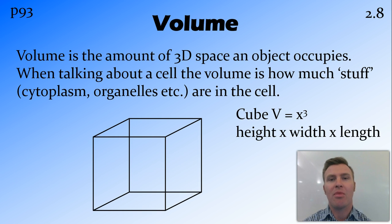Volume is the amount of 3D space that an object occupies. So when we're talking about cells, we're talking about how much stuff—cytoplasm, organelles, all those things that are inside a cell—how much of that stuff is in the cell. The volume of a cube is the size cubed, funnily enough, or the height times the width times the length. But if it's a cube, all those three will be the same, so you can just times that by itself twice.